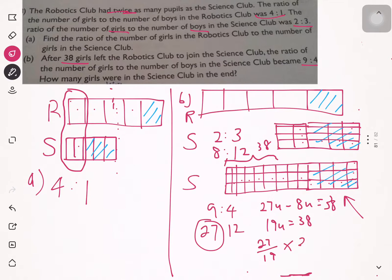The answer is 54. There were 54 girls in the science club in the end.